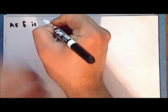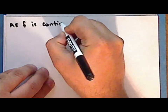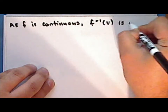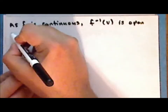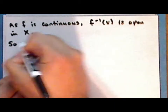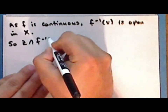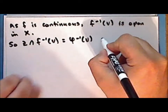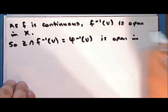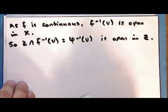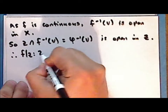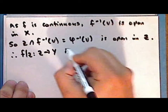Now as the function f is continuous, the inverse image of v is open in the space x. And so the intersection of z with the inverse image of v — which is the inverse image under the map phi of the set v — is open in the subspace z. And therefore the restriction of the function f to z, which is a map from z into y, is continuous.